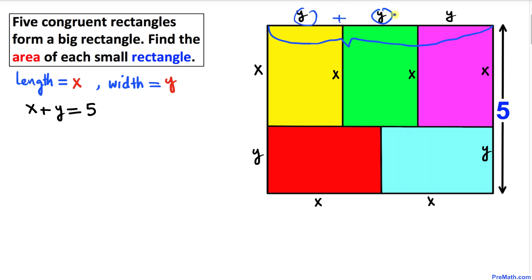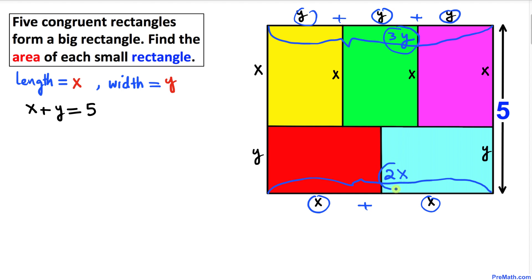Now let's focus on the length of this big rectangle, which is y plus y plus y — that makes 3y. On the other side, the length of this same rectangle is x plus x, which makes 2x. Since these are both the length, that means 3y equals 2x. So I can write the second equation as 2x equals 3y.